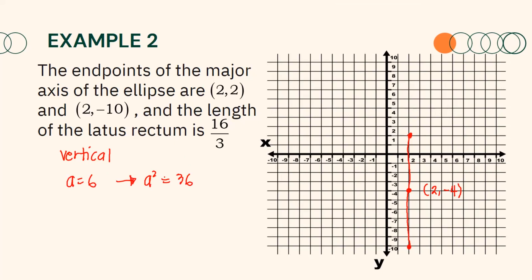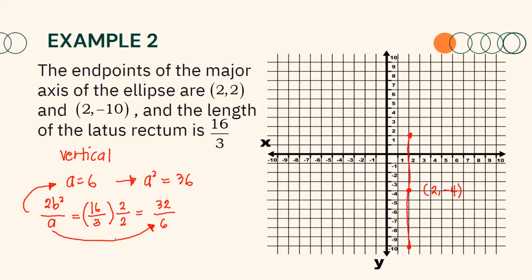Moreover, since the latus rectum is 16/3, and the length of the latus rectum is represented by the formula 2b² over a, we can say that 2b² over a equals 16/3. Notice that a equals 6, so we multiply the fraction by 2/2 to achieve 32/6. Now we can see that a is equal to 6, and 2b² is equal to 32. Dividing both sides by 2, b² equals 16.